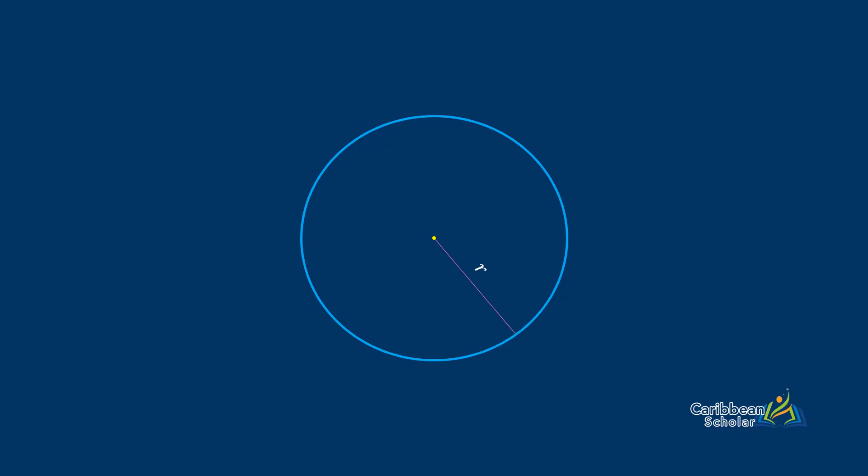A diameter on the other hand goes from one end of the circle, passes through the center, onto the other side of the circle. Notice that it really must pass to the center. The diameter is twice the length of the radius.